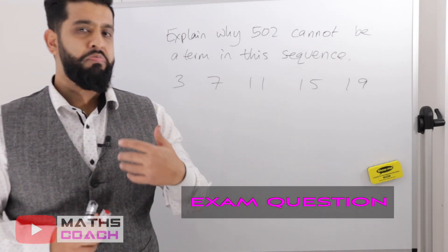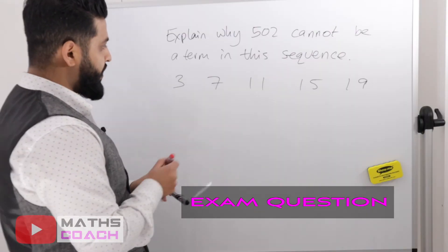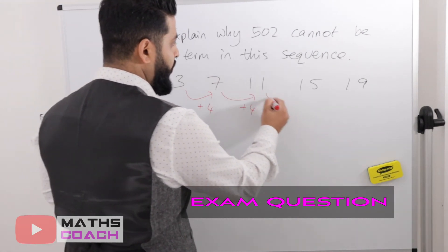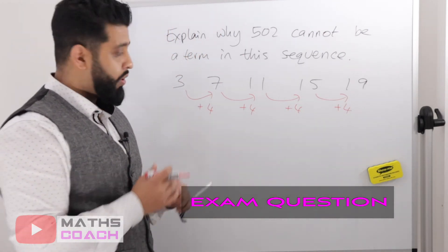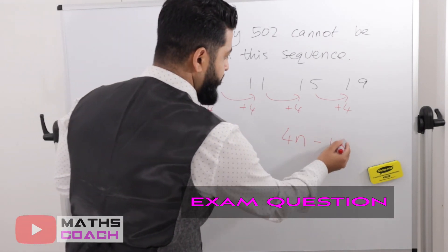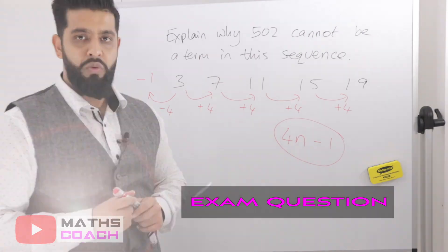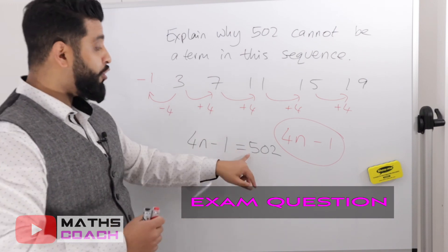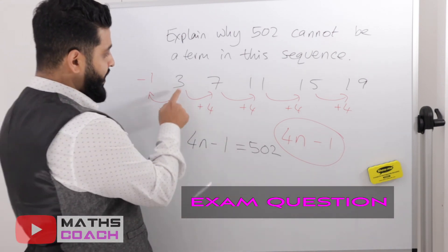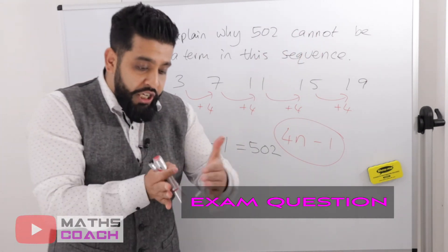Now for an actual exam question — probably a grade 4 difficulty. It says: explain why 502 cannot be a term in this sequence. First we find the nth term. The sequence 3, 7, 11, 15, 19 has a common difference of 4, so we write 4n. Going back from the first term: 3 minus 4 is minus 1. So the nth term is 4n minus 1.